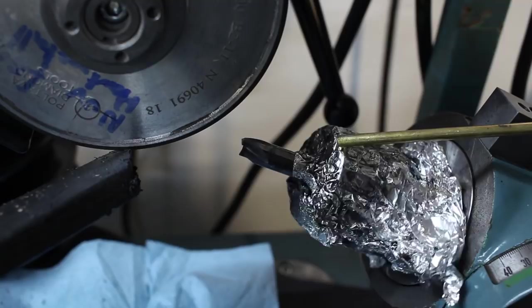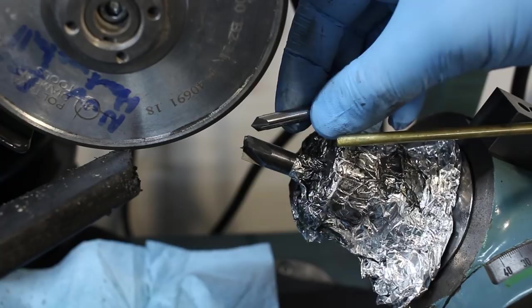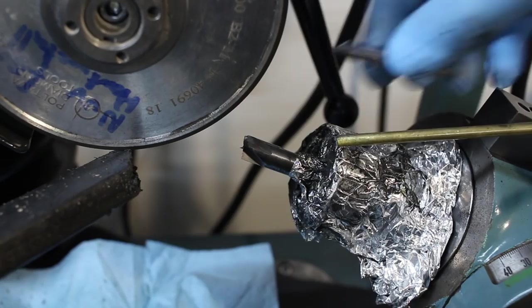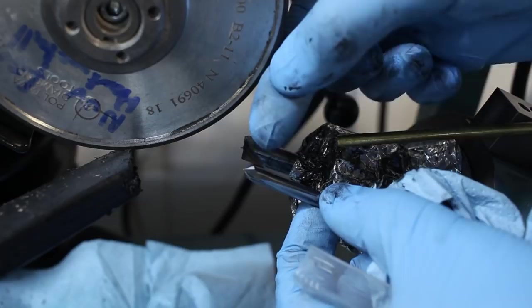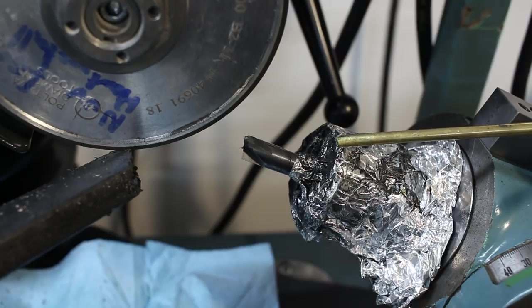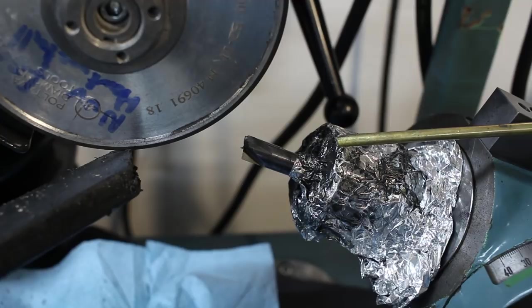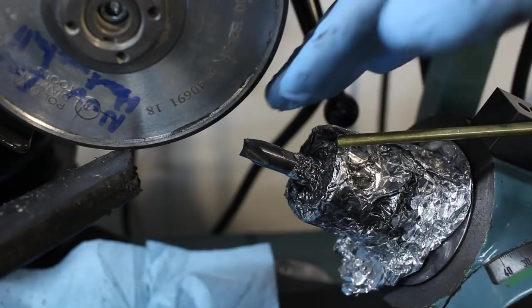Okay, here is the carbide blank with the four flutes ground into it. And that's exactly what you would do to an existing deburr end mill to cut the flutes deeper. Exact the same procedure.